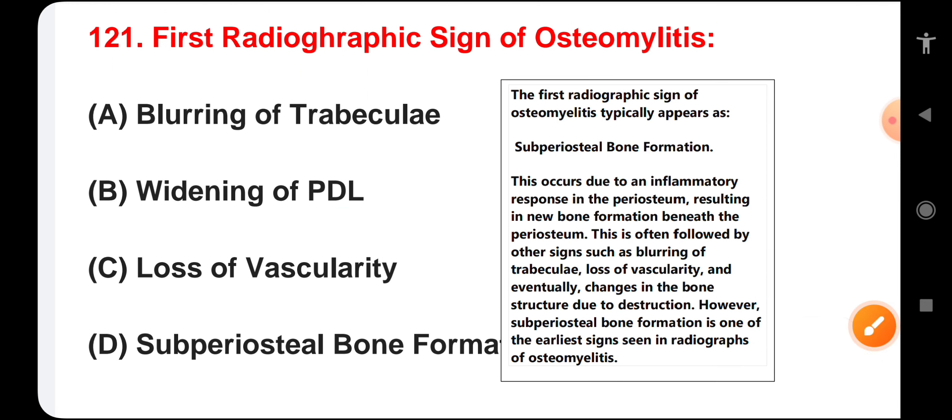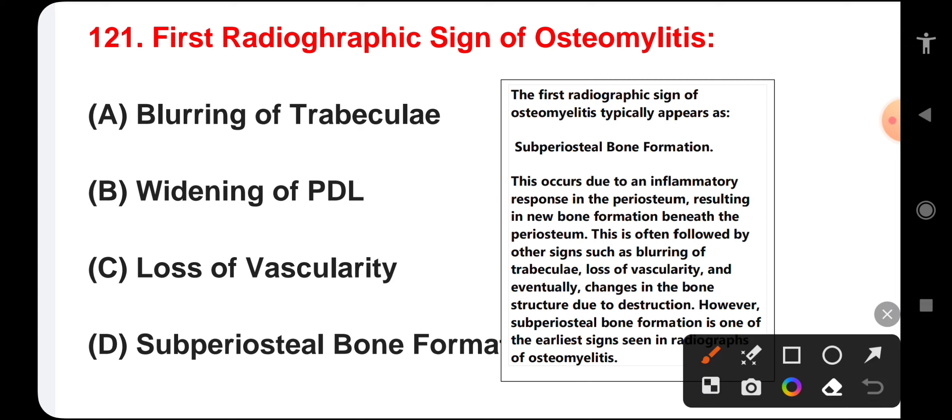First radiographic sign of osteomyelitis: blurring of trabeculae, widening of PDL, loss of vascularity, or subperiosteal bone formation. The first radiographic sign is subperiosteal bone formation. This occurs because of inflammatory response in the periosteum causing new bone formation beneath the periosteum. Afterwards come blurring of trabeculae, loss of vascularity, and changes in bone structure due to destruction.